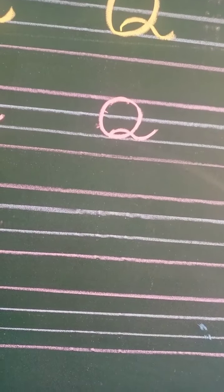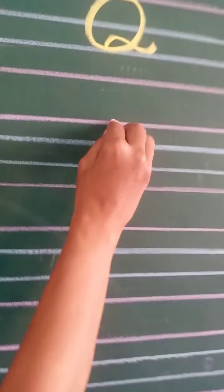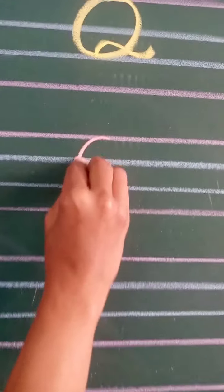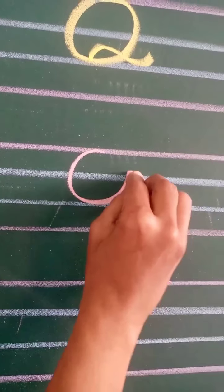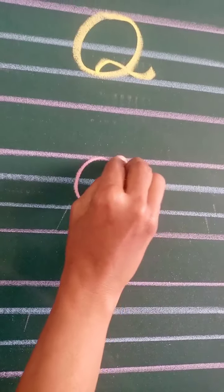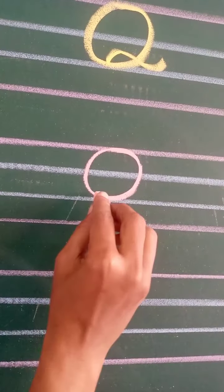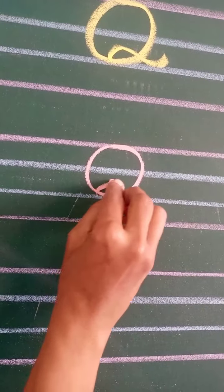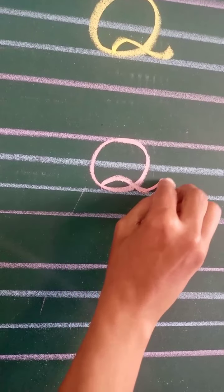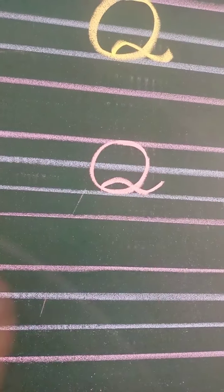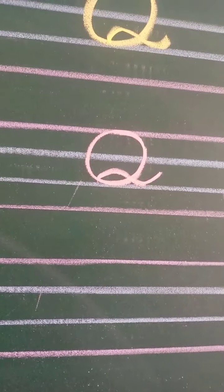Again, look here. From the red line, come down till the second blue line, go up like this. Now make a curve, go down like this. This is Q.